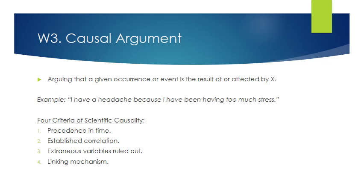There are four criteria for establishing causality. First, there has to be precedence in time — the cause must occur before the effect. Second, there has to be a correlation between the cause and the effect; if we increase or decrease the cause, something needs to happen to the effect. Third, you have to rule out extraneous variables — the world has changed a lot and there are many things that could potentially be a factor, so you have to rule out all other possibilities.